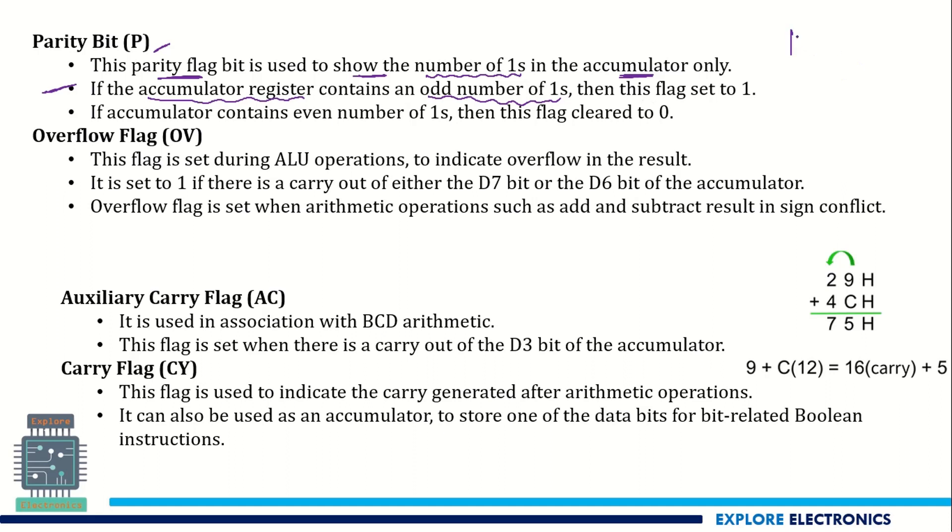Out of 8 bits in the accumulator, if it contains only 1 number of 1s or 3 number of 1s or 5 ones or 7 ones, then this flag will be set to 1. We come to know that the output of the ALU that is in the accumulator is consisting of odd number of 1s. And if there is an even number of 1s, the flag will be set to 0. It is reset, we say.